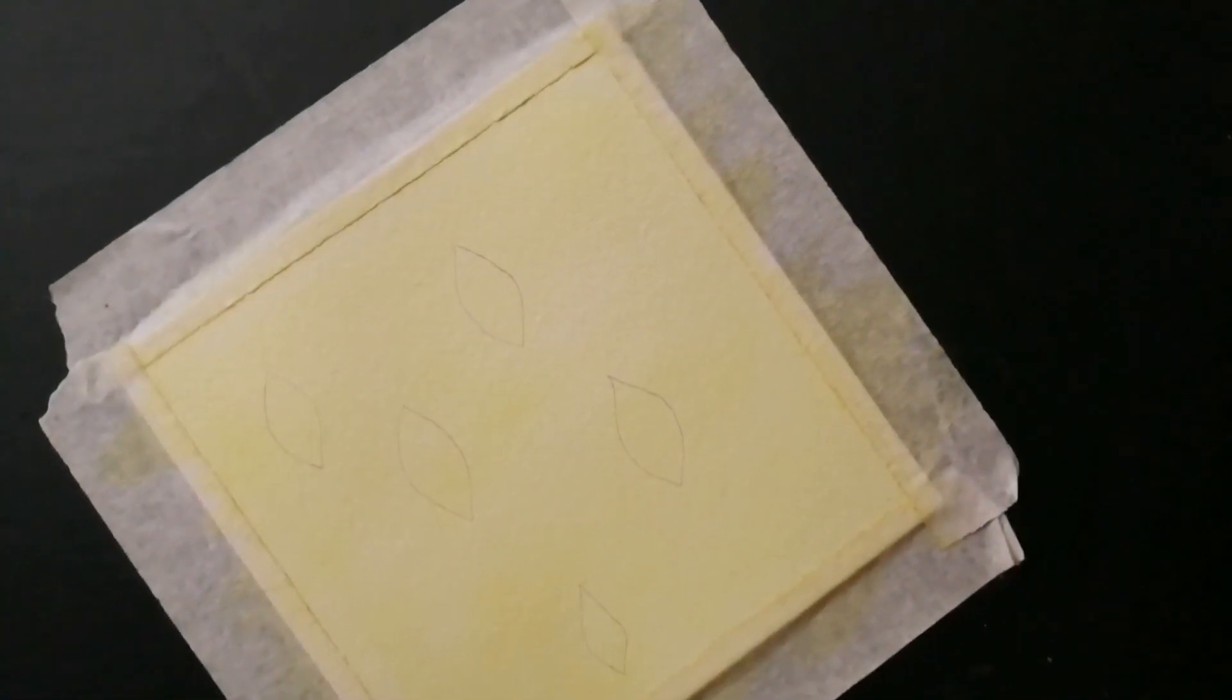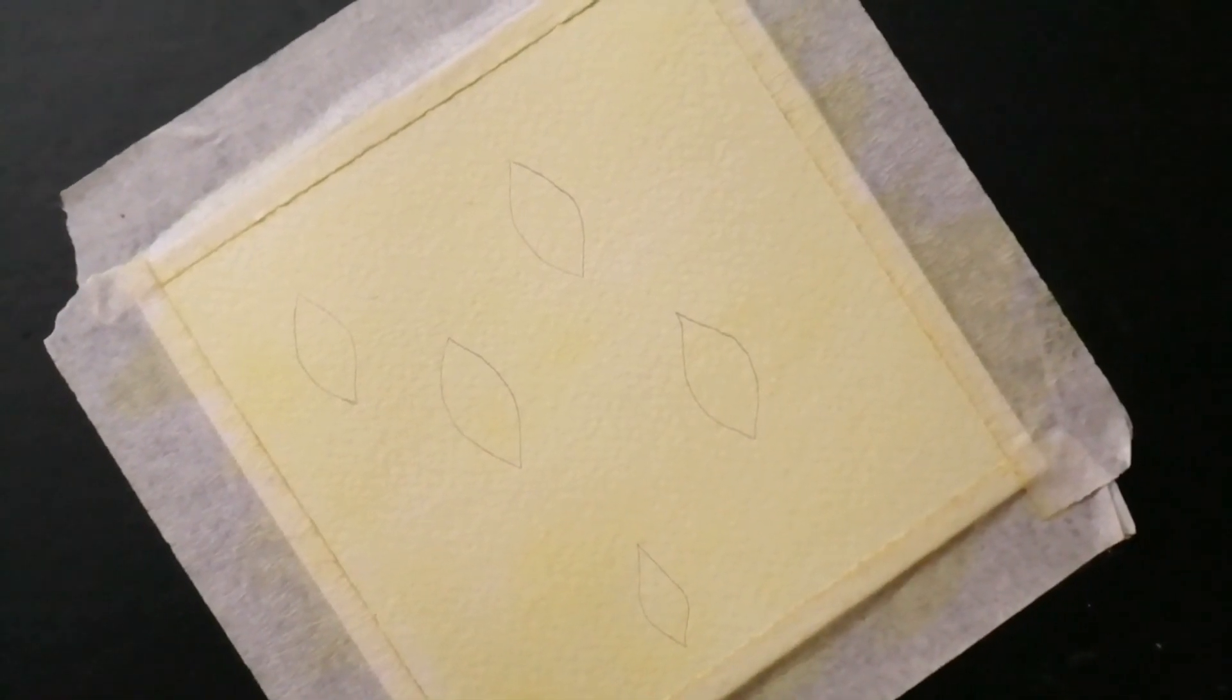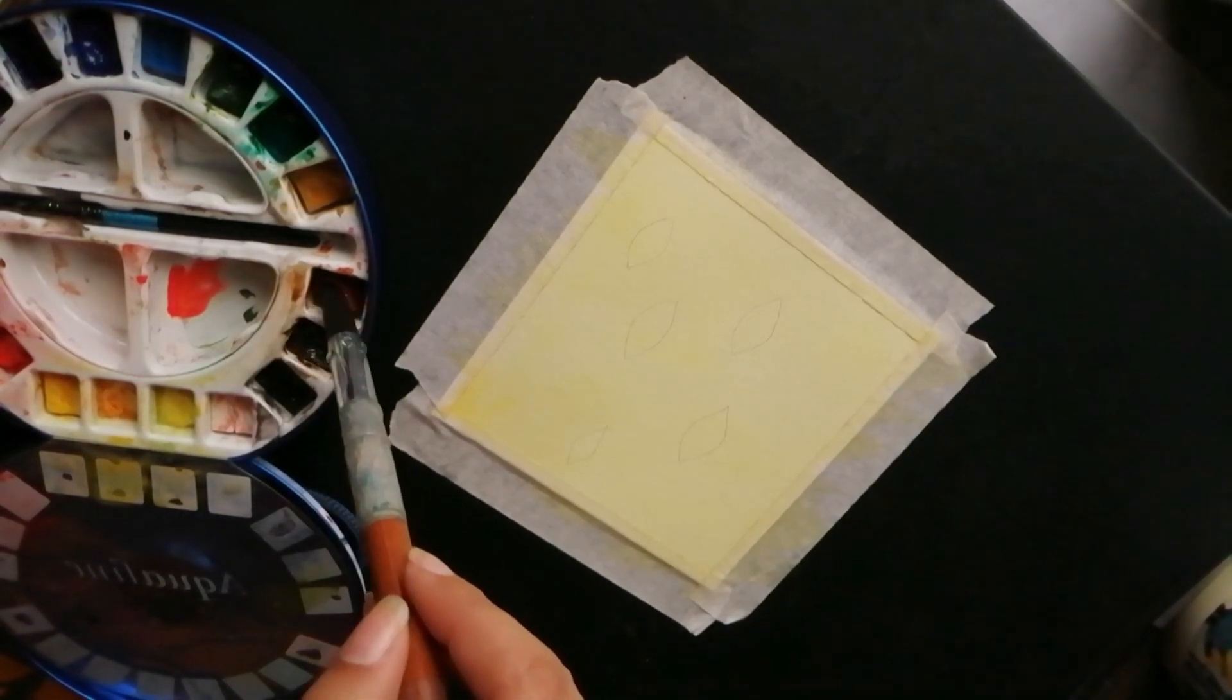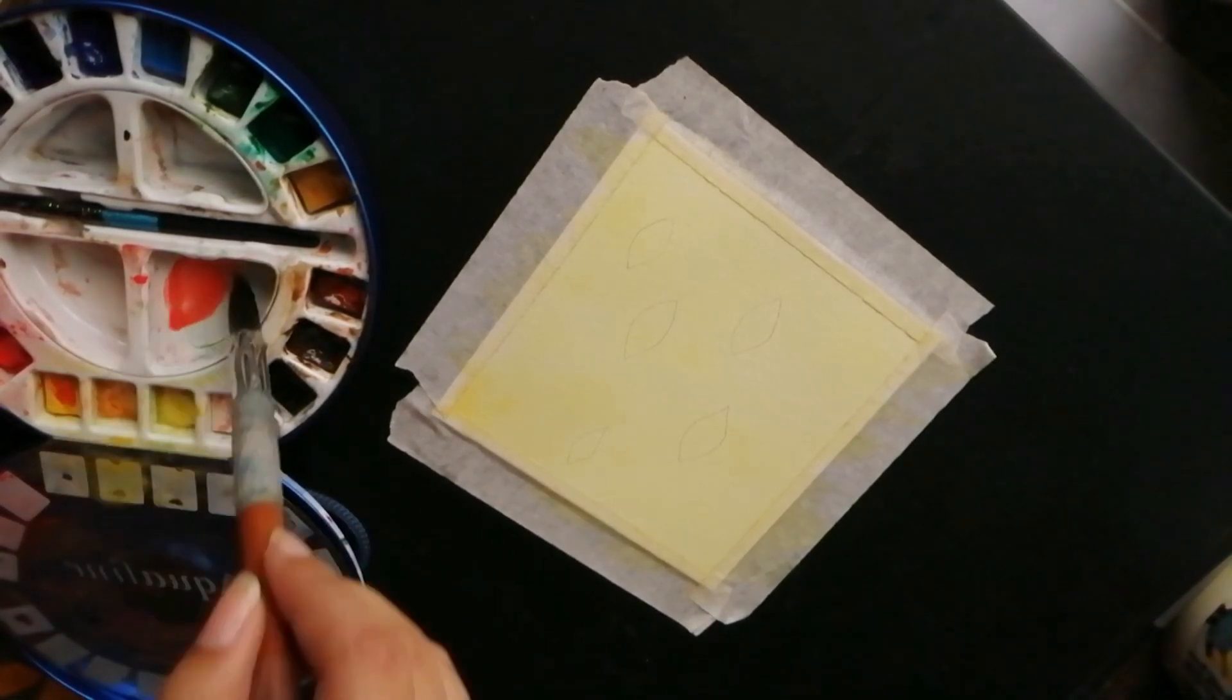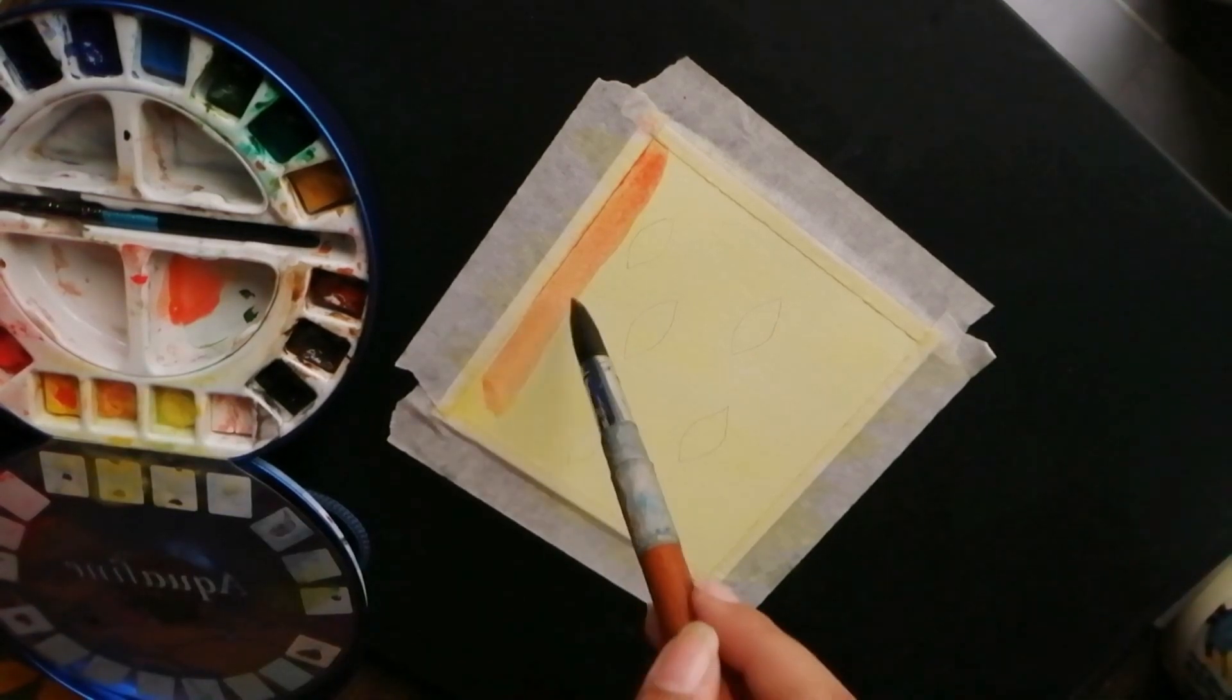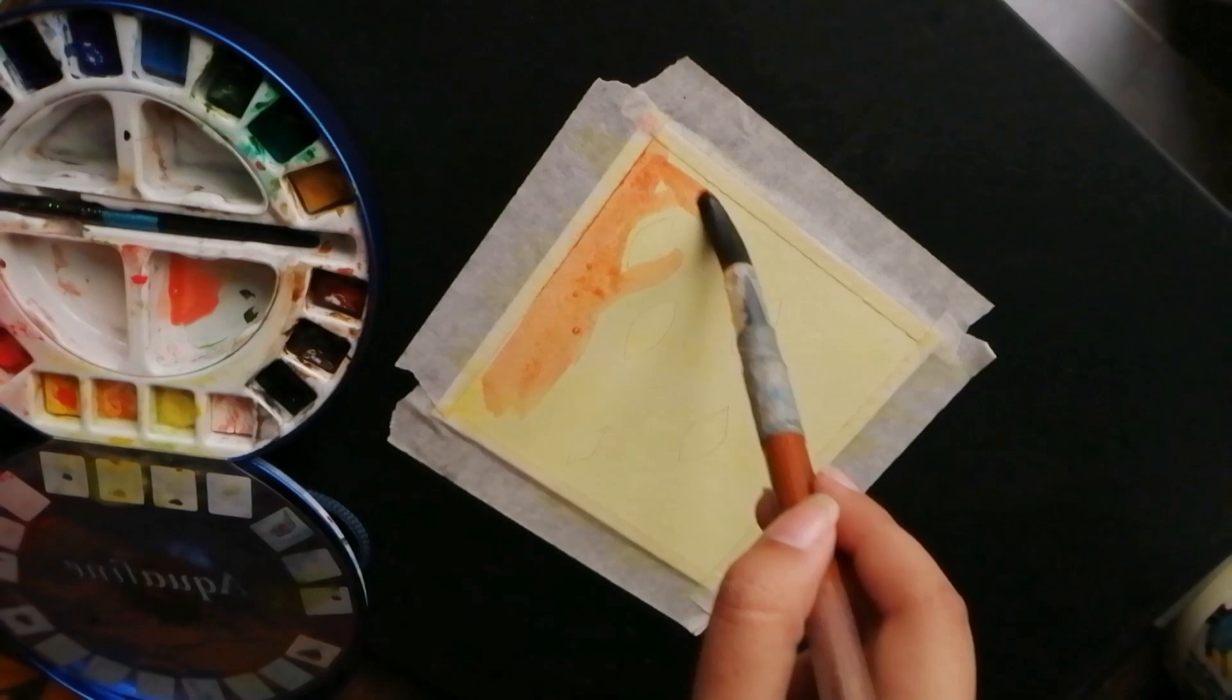Just draw some shapes in different sizes. Then you're going to mix some orange tones and yellows together and paint everywhere except inside the shapes you just drew. You need to basically paint the negative space, which is the area outside the shapes. Painting around the flames will help the yellow glow and appear way more bright and saturated.